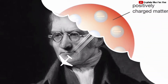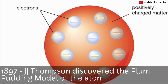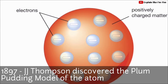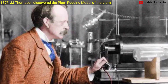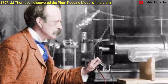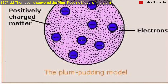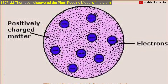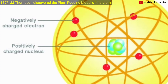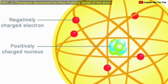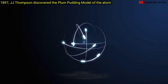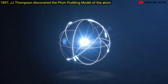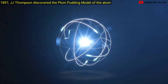In the year 1897, J.J. Thomson discovered the electron. He proposed the plum pudding model of the atom in 1904, before the discovery of the atomic nucleus, in order to include the electron in the atomic model. In Thomson's model, the atom is composed of electrons, which Thomson still called corpuscles.